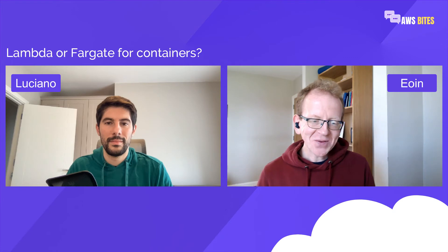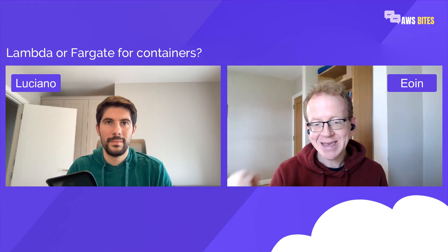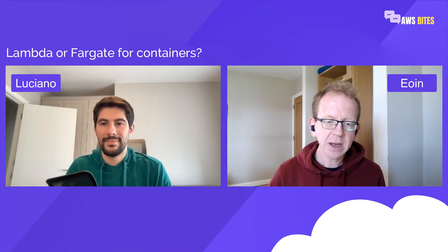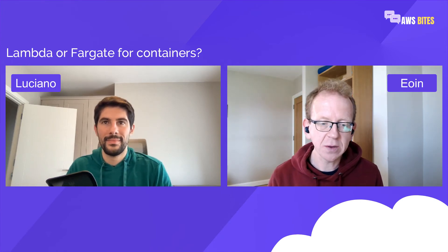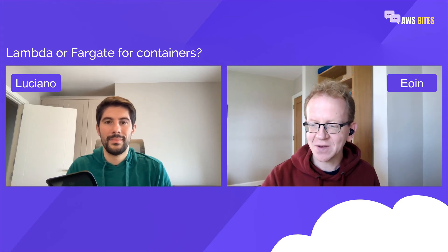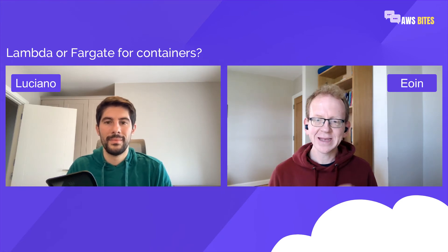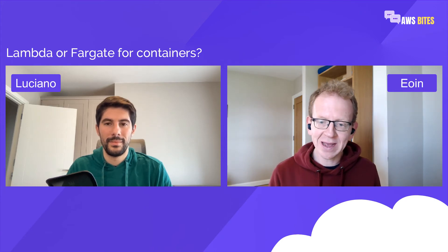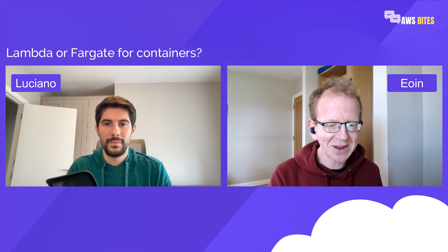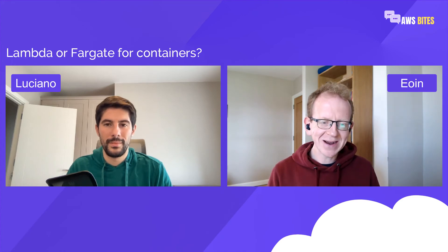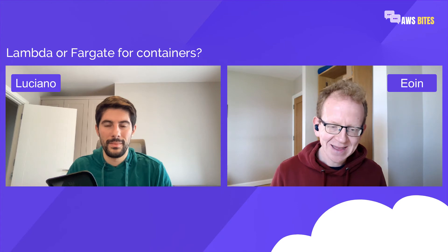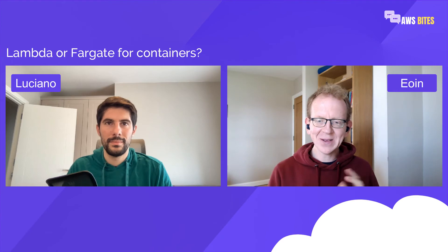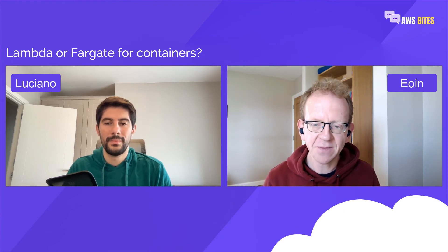Interestingly, Lambda allows you to get up to six CPUs if you have a lot of concurrency going on in your compute, while Fargate's limit is actually just four CPUs. It depends on your context and you have to evaluate each thing separately. Also, Fargate allows you to control CPU and memory independently, but with Lambda, moving the memory slider also moves the CPU slider and the amount of networking bandwidth you have. So it's all about your context and understanding which works best for your workload.